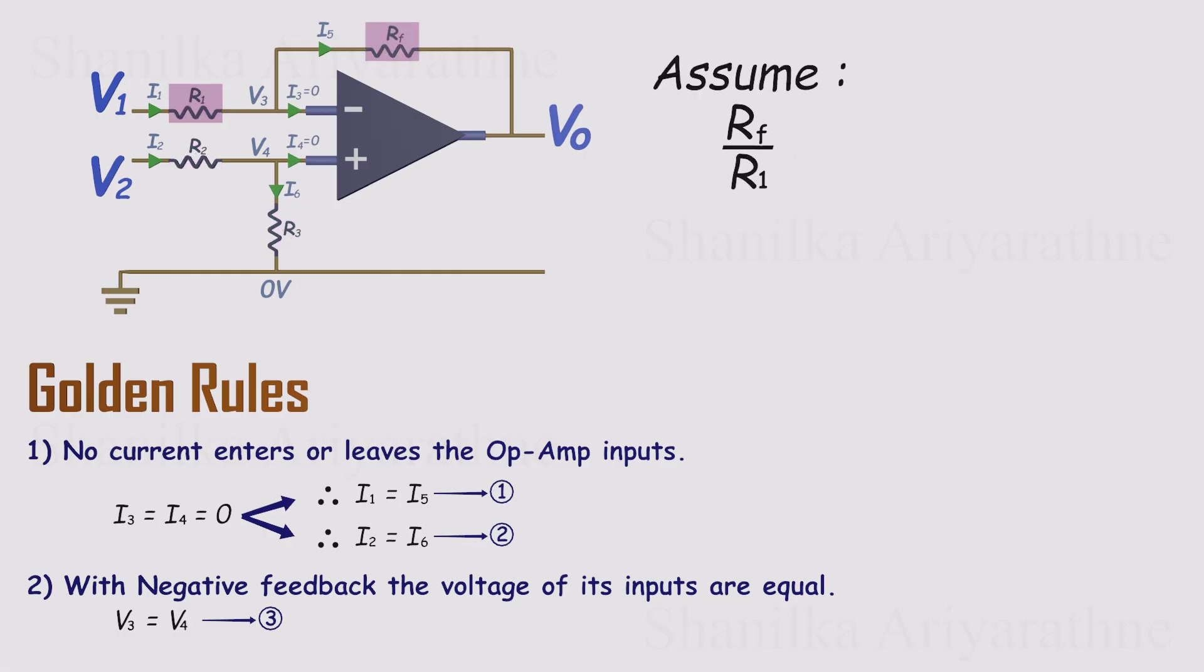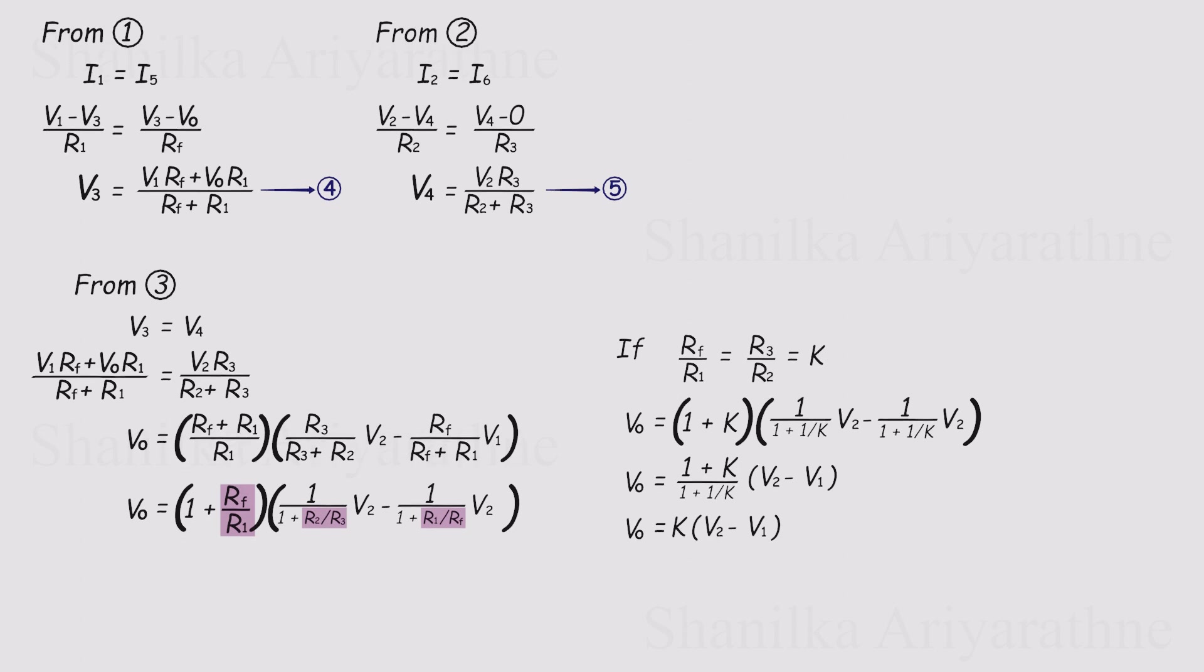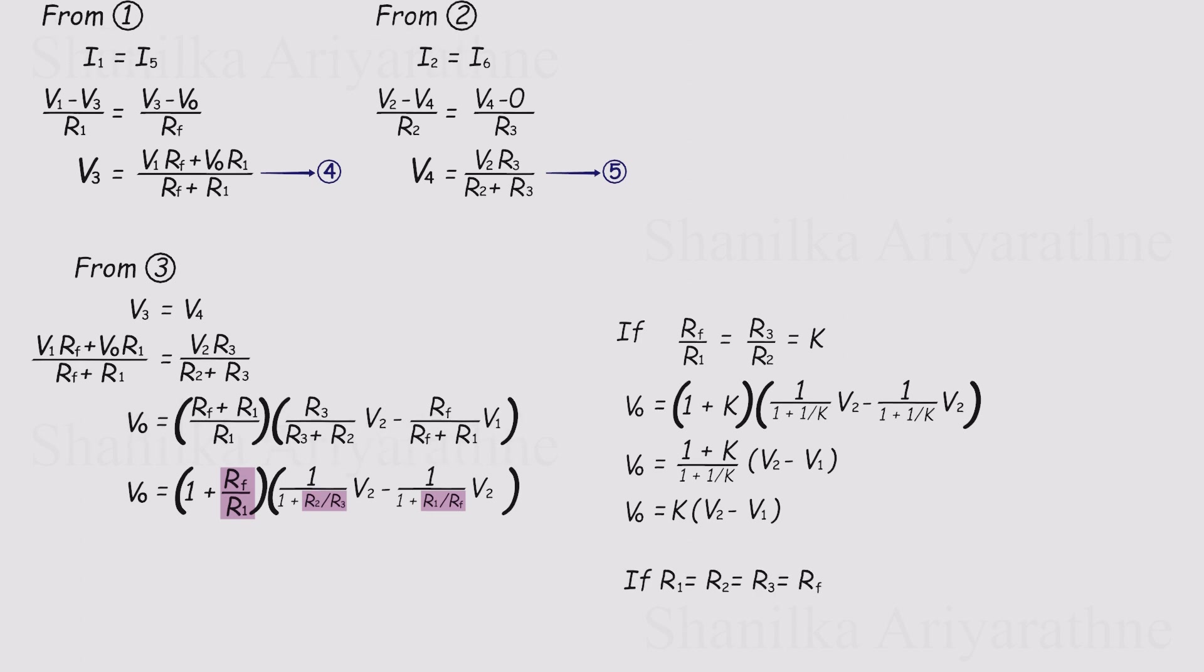Call that common ratio K. With that substitution, most of the clutter cancels out and we're left with a beautifully simple result. Vout equals K times V2 minus V1. And if all four resistors are equal, then K equals 1, and the output is just the clean difference between the two inputs.